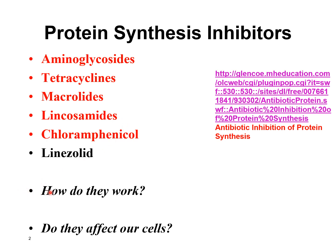The other thing to note for the exam is how these antibiotics work. What they do is bind to 70S ribosomes. The 70S ribosomes are found in prokaryotes like bacteria. By binding to the 70S ribosomes, they inhibit protein synthesis, and that can either kill the bacteria or inhibit their reproduction.